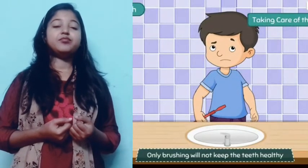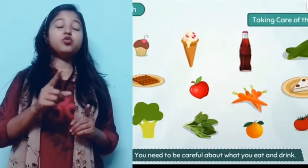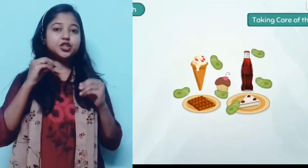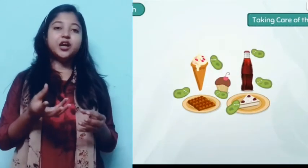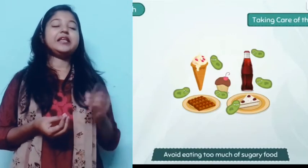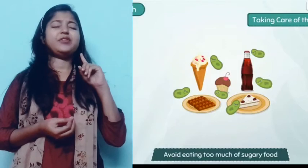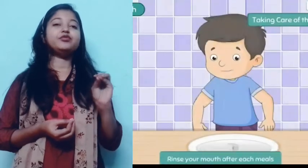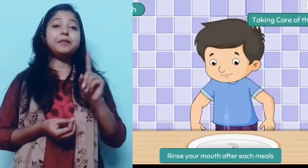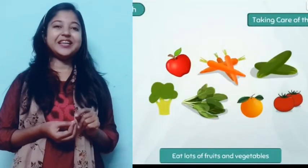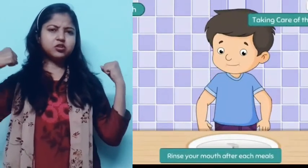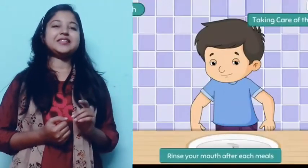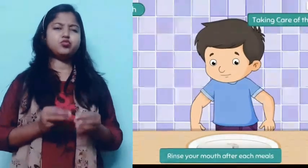And what else do we have to do? We have to eat good, healthy food. Our teeth help us to bite and chew. If we eat junk food, sweets, and chocolates, then the germs will attack and we will have cavities. So we have to eat healthy food — fruits, salads, and milk. Milk is very important; it makes our teeth stronger. We have to avoid junk food, sweets, and chocolates.